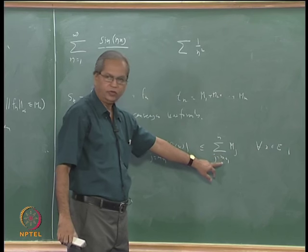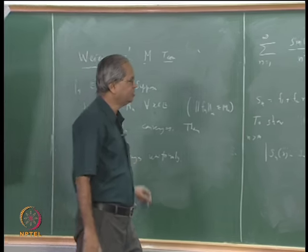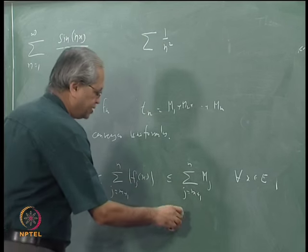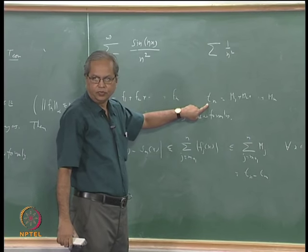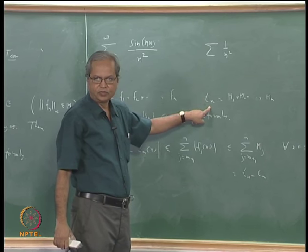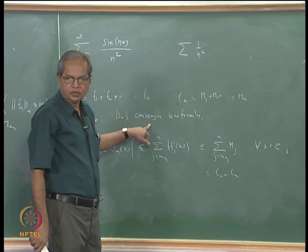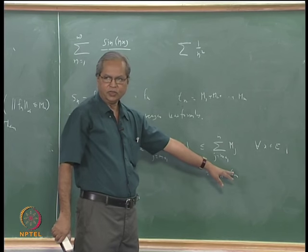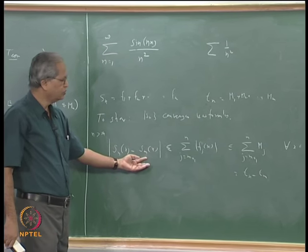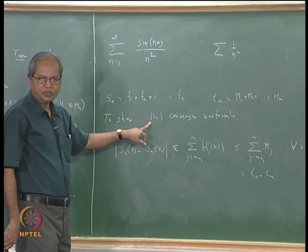Since Σ M_n converges, the sequence t_n is convergent, hence a Cauchy sequence of real numbers. Given any epsilon, we can find N_0 such that whenever n and m are greater than or equal to N_0, |t_n - t_m| < epsilon. This implies |s_n(x) - s_m(x)| < epsilon for every x in E, which means s_n satisfies Cauchy's criteria and hence converges uniformly.